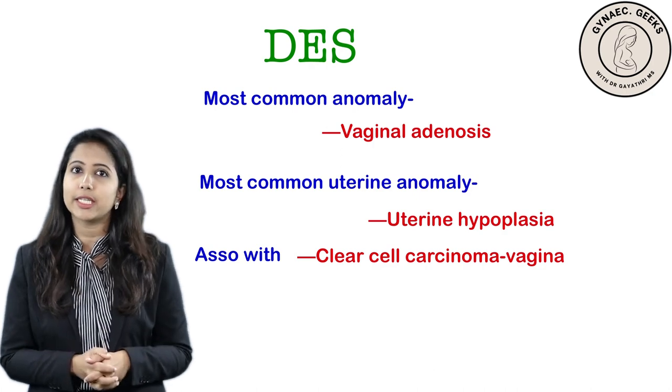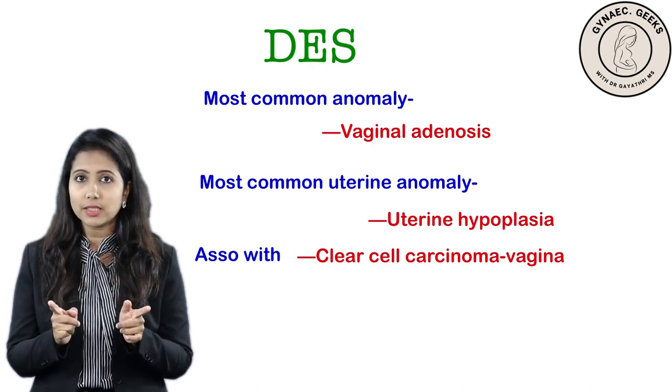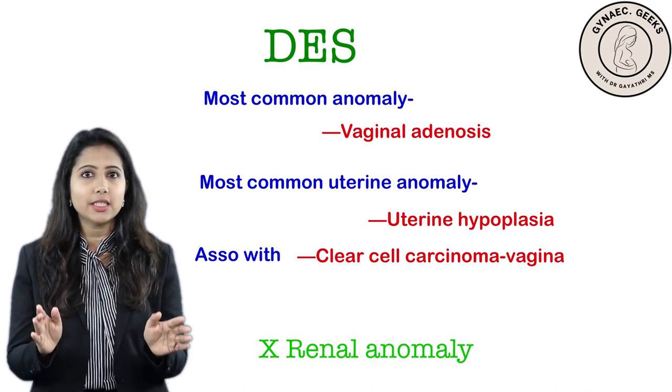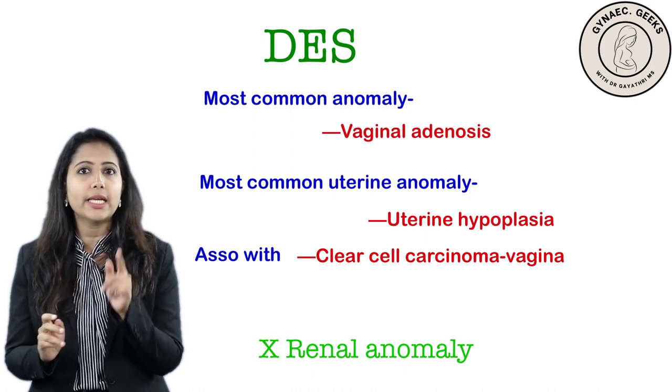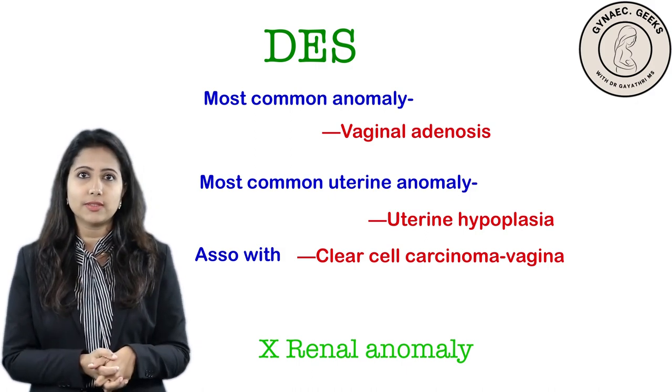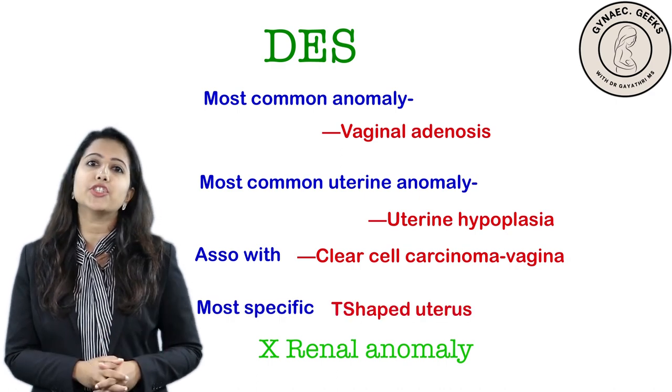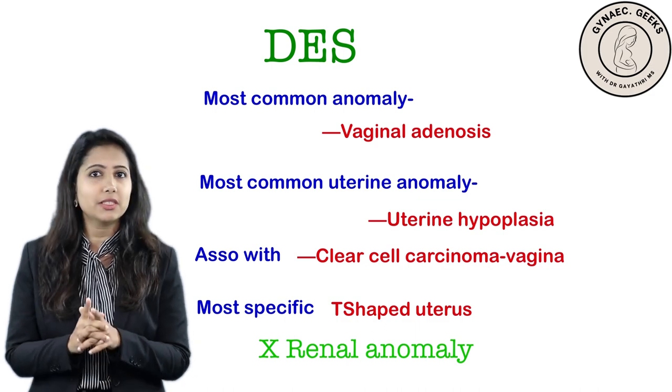DES is also associated with clear cell carcinoma of the vagina. In all-except questions, note that renal anomalies are not related to DES. The most specific anomaly associated with DES is T-shaped uterus. In the next part, we will see how to differentiate each anomaly when an image-based question is given. That's all for the first part of Mullerian anomalies — bye-bye!